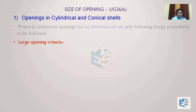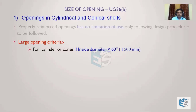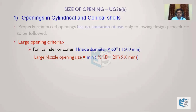So we first need to decide whether a nozzle qualifies as a large opening or a normal opening. The large opening criteria is given only for cylinders and conical shapes. For cylinders or cones with an inside diameter less than 1500mm (i.e., less than 60 inches), a specific large opening criterion applies.